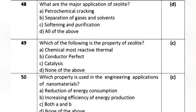Question 25: Which of the following is the property of zeolite? Option A: chemically most reactive thermal. Option B: conductors perfect. Option C: catalyst. Option D: none of the above. The correct answer is Option C: catalyst.